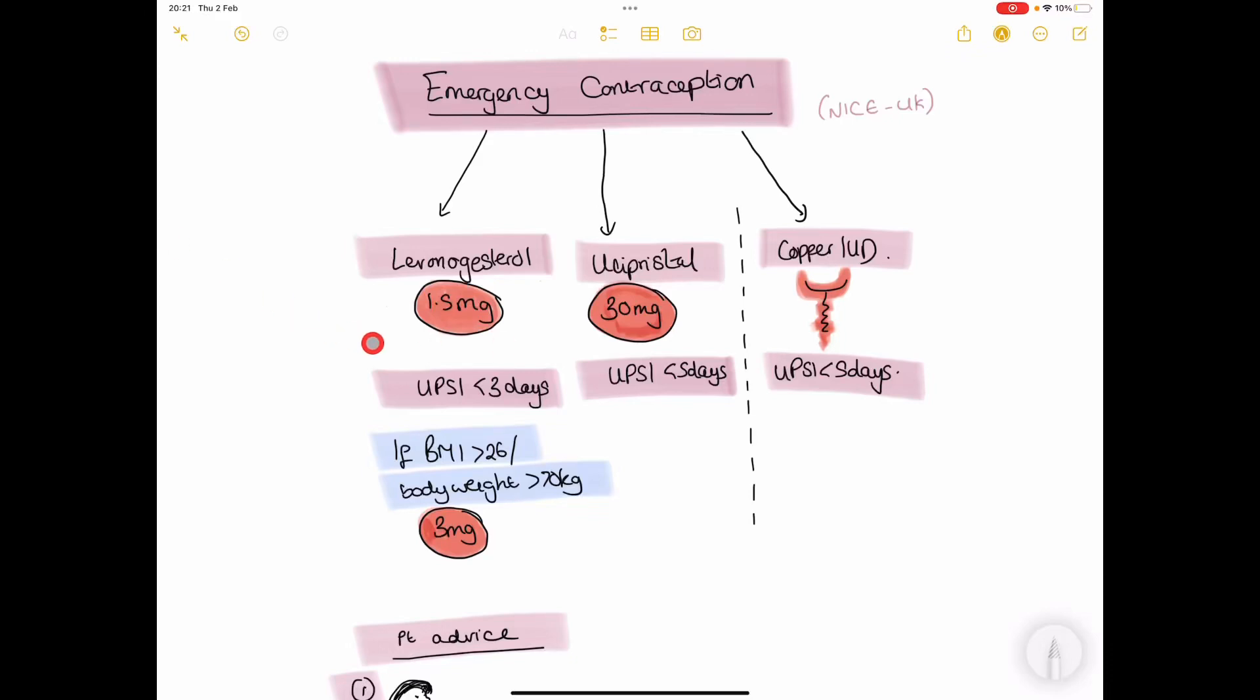There are three types of emergency contraception that we can offer patients in the UK: two oral forms and one intrauterine device.